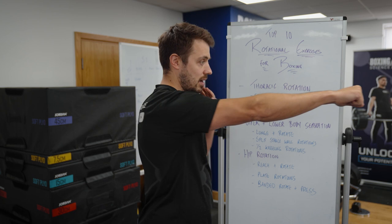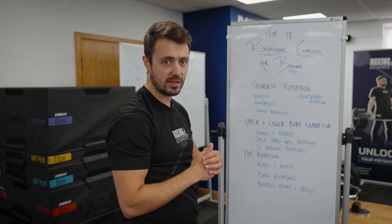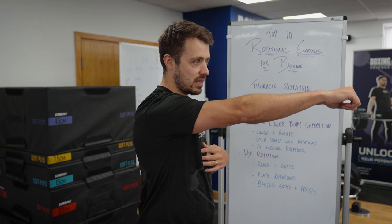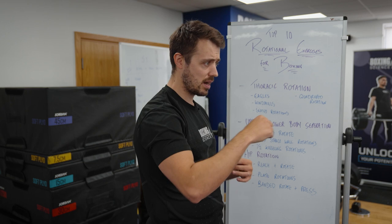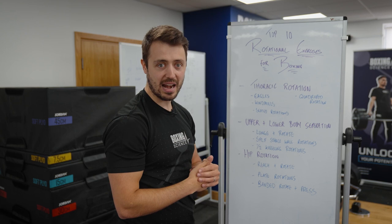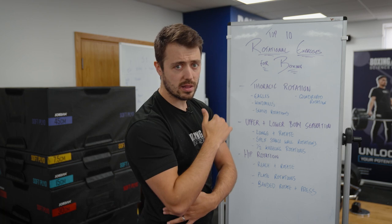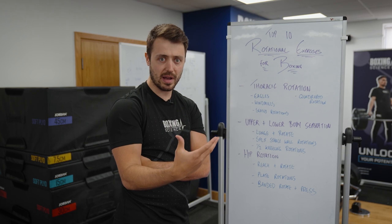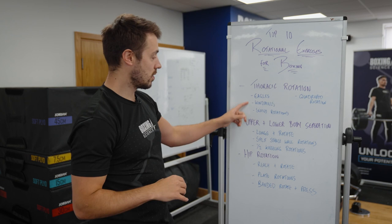If our thoracic rotation isn't efficient, we'll start compensating by using the lower back, getting into a non-advantageous position, or more commonly start to side bend and utilize a muscle called the QL — quadratus lumborum — which ends up being quite tight. That's why a lot of boxers end up with tight, sore lower backs. We want to try and increase that thoracic rotation range.